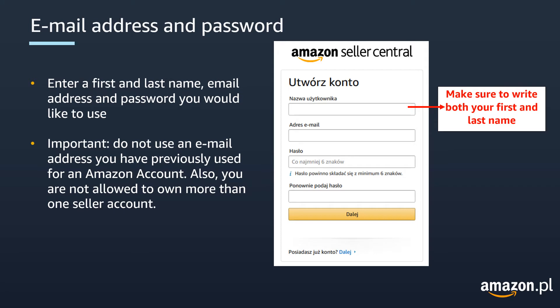The first thing you have to do to create an Amazon Seller account is to enter your first and last name. You will also need to enter an email address and the password you would like to use to access your account. Then, click on Next.